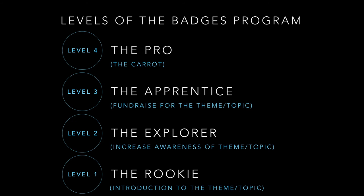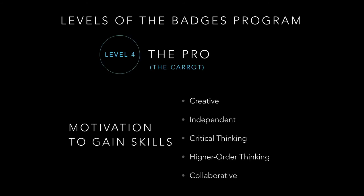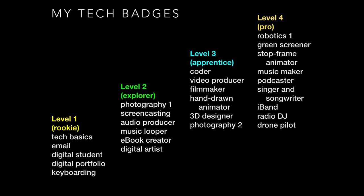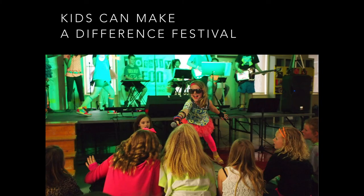Students start as a rookie and work all the way up to becoming a pro. The pro level is high-end and takes a long time to earn — not many students have it, so it's well respected. At the pro level you've got robotics, singing in a band with digital instruments, and 3D design. Everything culminates in a school 'Kids Can Make a Difference' festival, where students use their skills in a fundraiser for charity. One highlight is an i-Band where all the instruments are iPads — guitar, drums, keyboard — performing at a fundraiser concert.